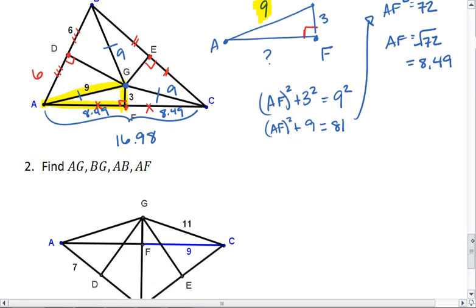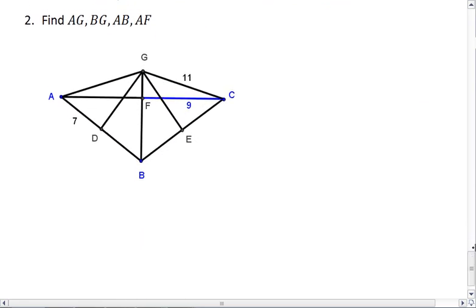And example 2. Again, G is the circumcenter, meaning that its distance to all three vertices is the same. So AG is also 11, BG is also 11, and we were given that CG is 11.